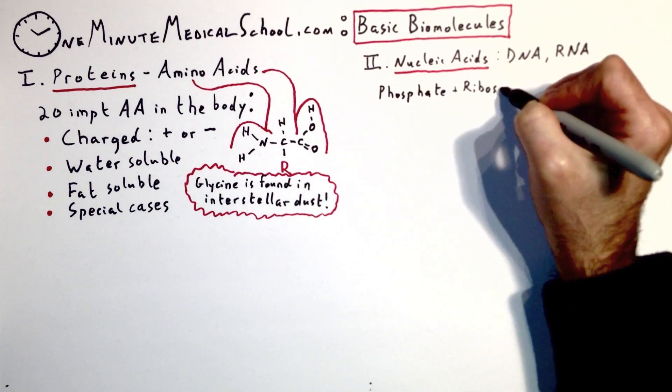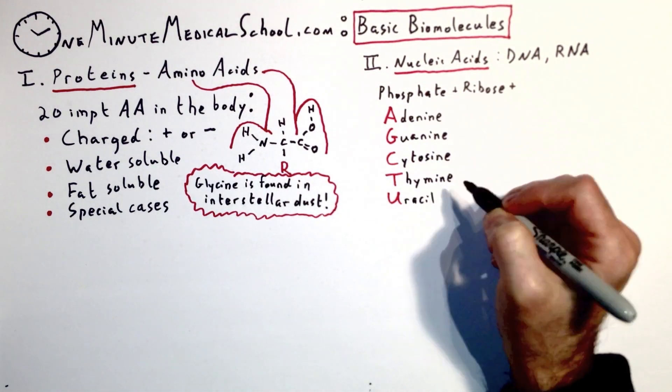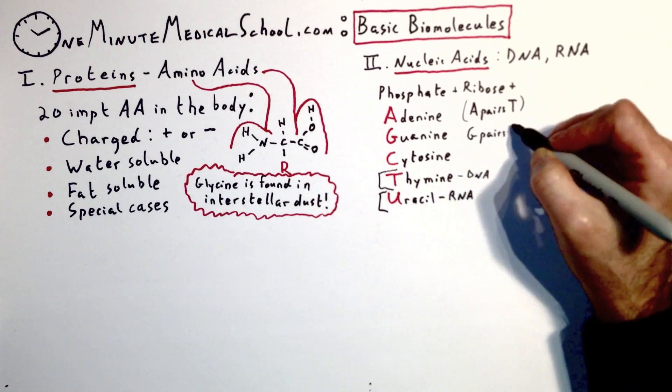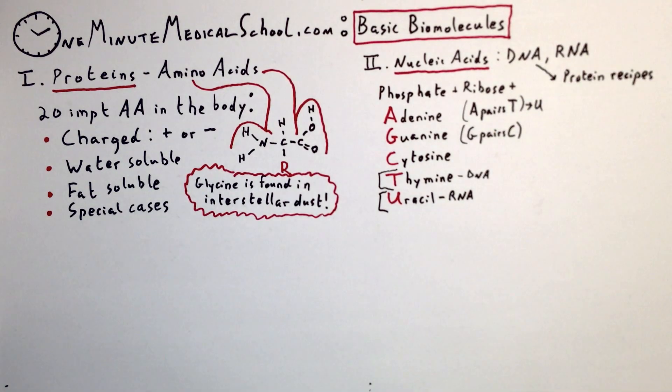Nucleic acids, which are the protein recipes, are phosphate plus a ribose plus a nucleobase. Adenine, guanine, cytosine. Thymine is in DNA. Uracil is in RNA.